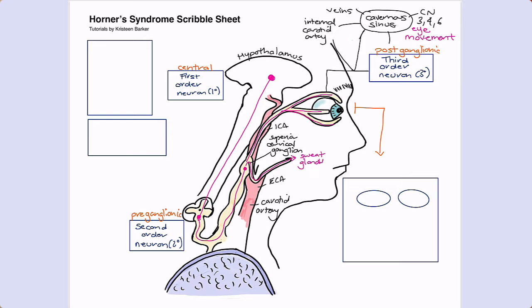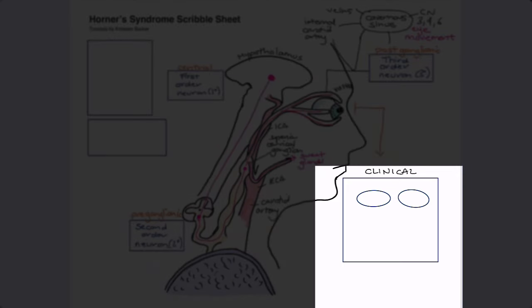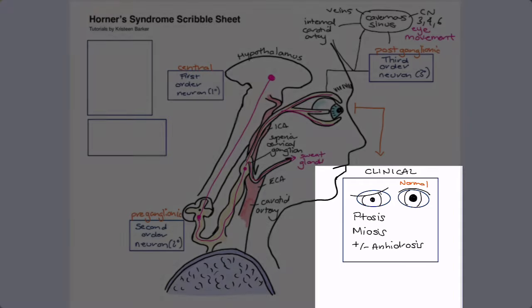When the third-order neurons arrive at the eye, they contribute to eyelid retraction through Müller's muscle and to pupillary dilation. In the absence of this innervation we get partial ptosis — which may be subtle because other nerves also control the eyelid — and pupillary constriction due to unopposed parasympathetic tone. Meanwhile, the remaining third-order neurons follow the external carotid artery and eventually reach the sweat glands on the face.